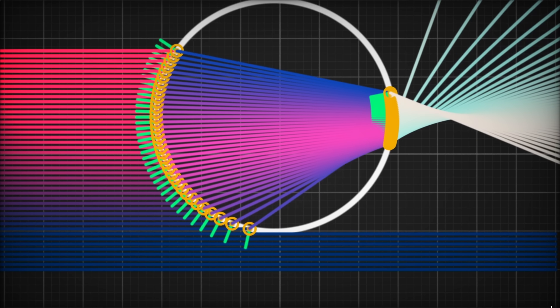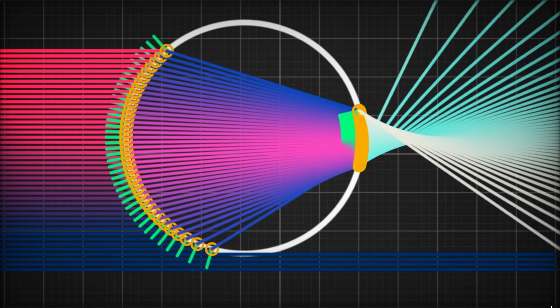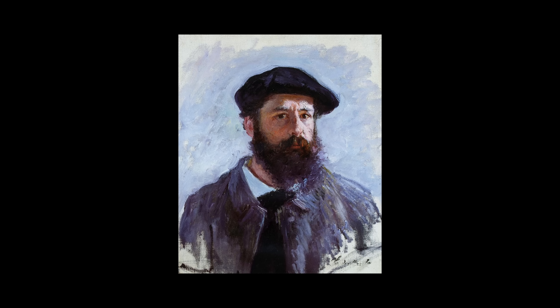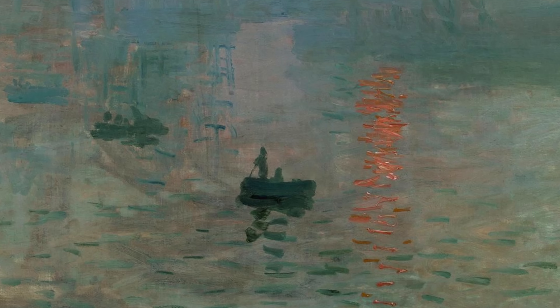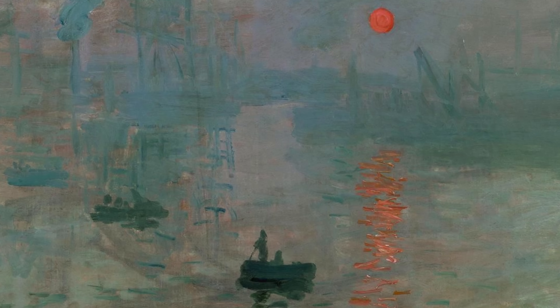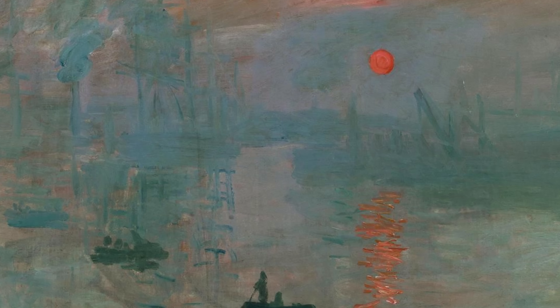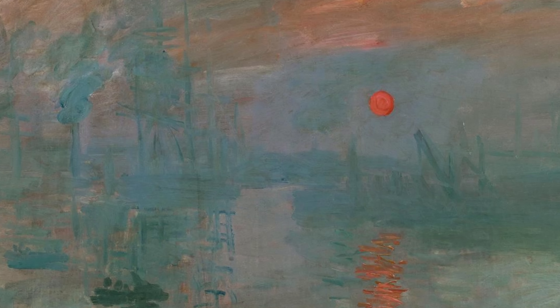Much like how a graphics programmer can become obsessed with simulating light in a 3D world, Monet was obsessed with how natural light from a subject interacted with the viewer. His focus was on how he could accurately describe not what the brain says we see, but what the eye is literally seeing. This idea of capturing just the light of the subject was groundbreaking and became a major pillar of impressionism.